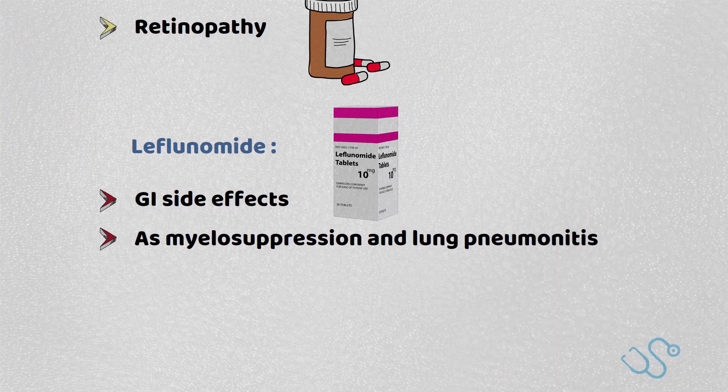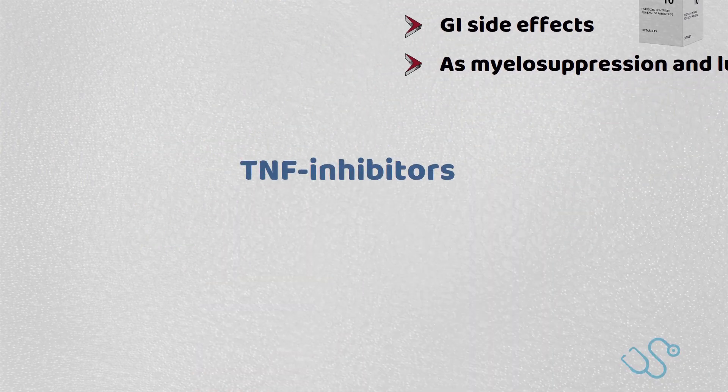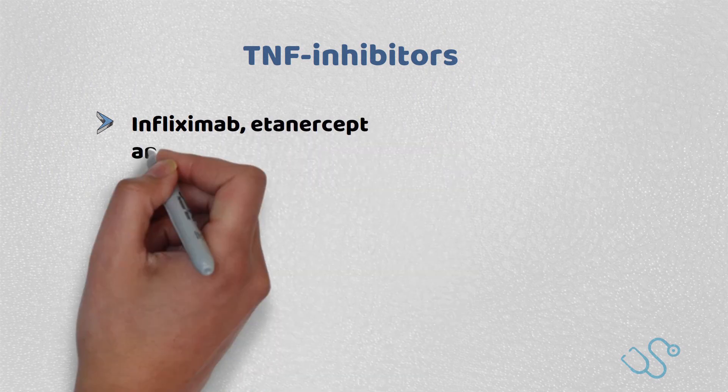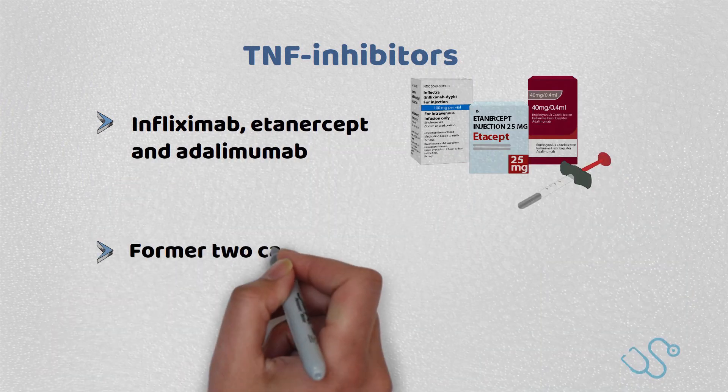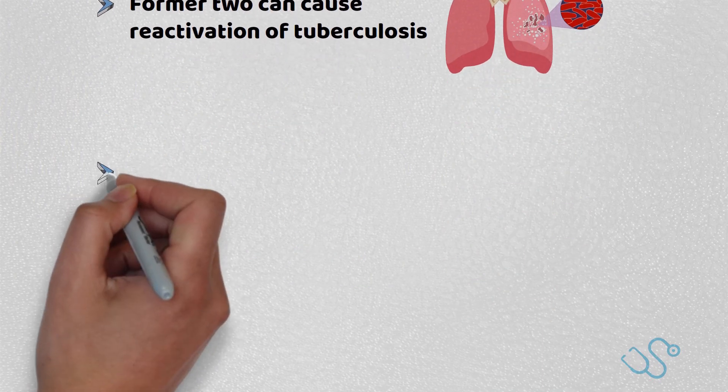Subsequent treatment often involves immunotherapy, such as TNF-alpha inhibitors, usually after the usage of at least two DMARDs has failed. These include infliximab, etanercept, and adalimumab, of which the former two can cause reactivation of tuberculosis, with etanercept also causing demyelination of the nerves.